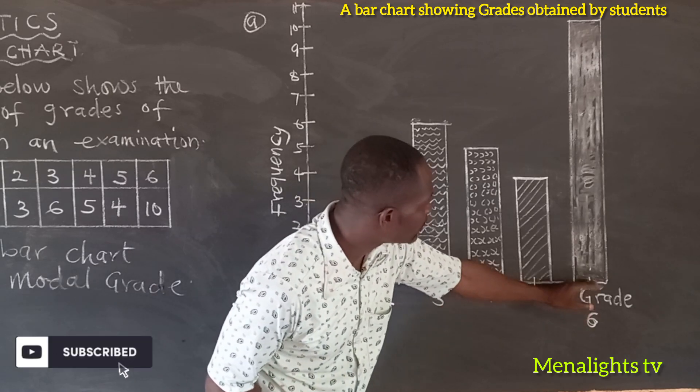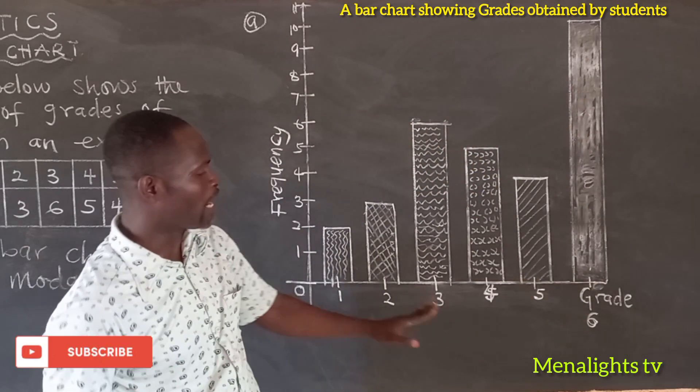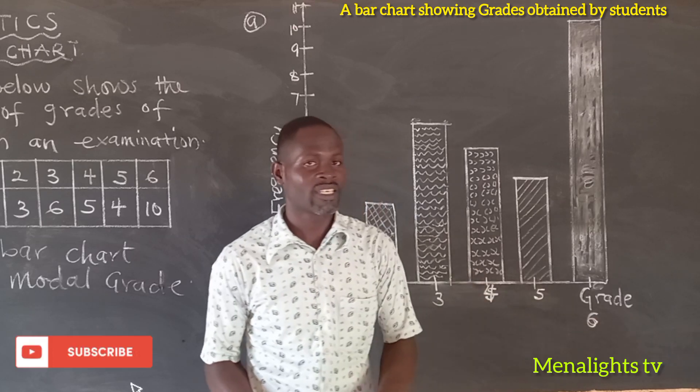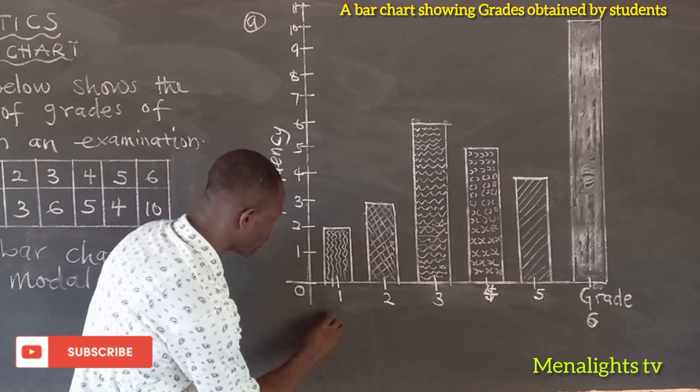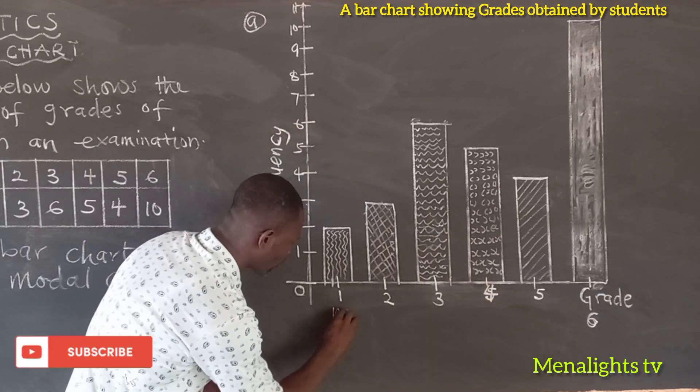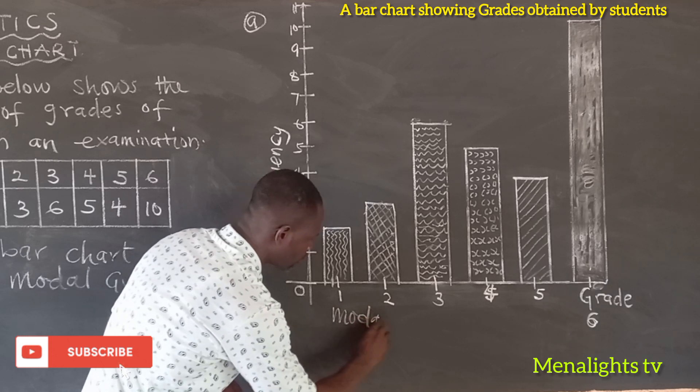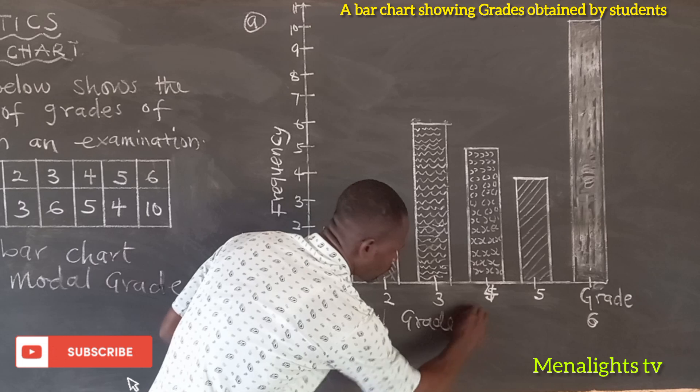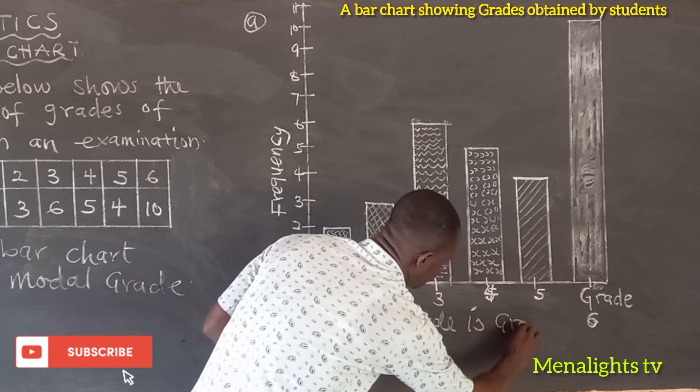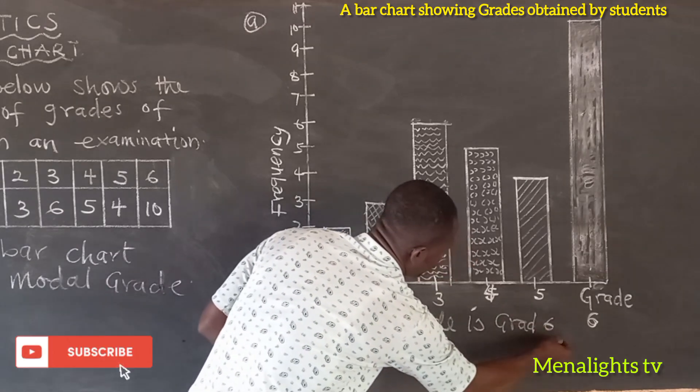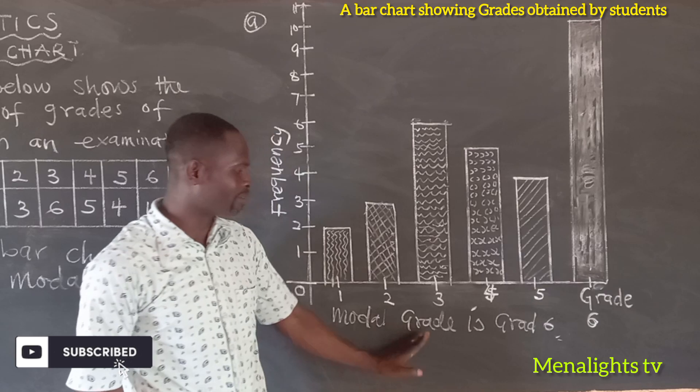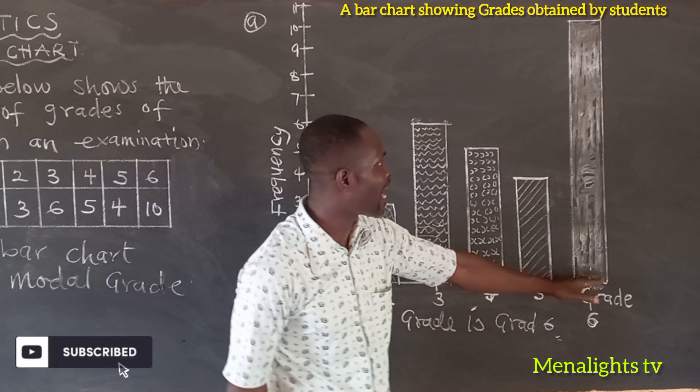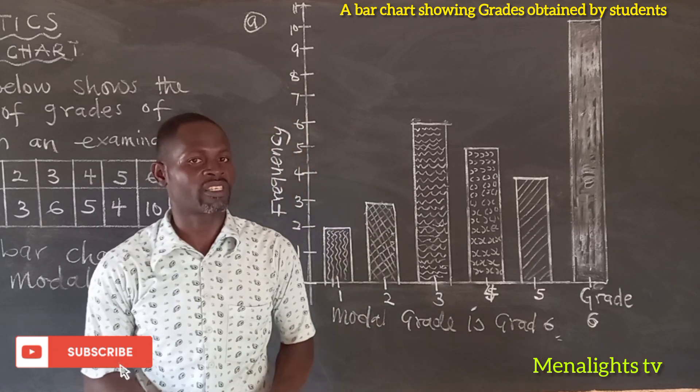So when you look at this, the highest frequency here is 10, and that belongs to grade 6. So we can say that grade 6 is the mode. The modal grade is the grade 6 because grade 6 is having the highest bar or the highest frequency.